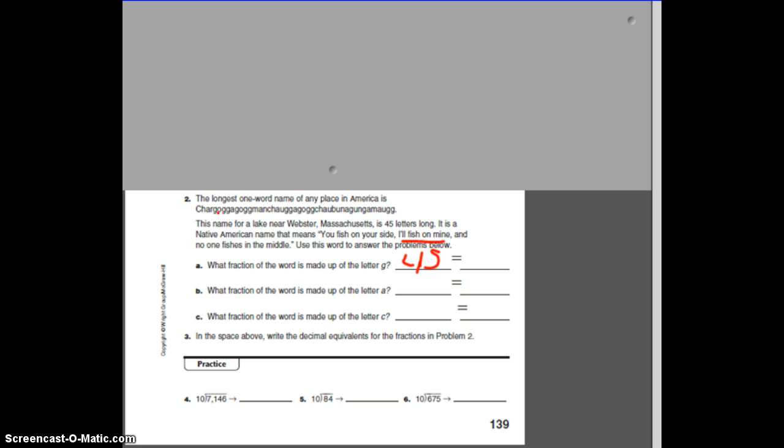And how many of those are G's? Got to count them. 1, 2, 3, 4, 5, 6, 7, 8, 9, 10, 11, 12, 13, 14, 15. 15 out of 45 are G's, and then we need to rename that, or we could reduce that fraction.